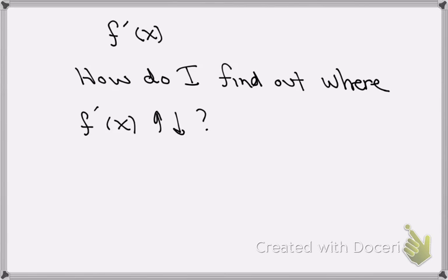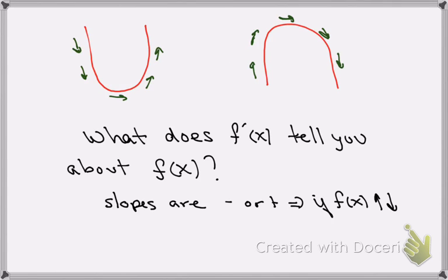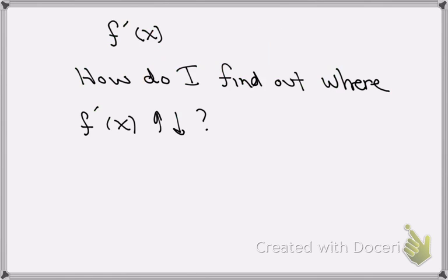Think about what you just said. When you wanted to find out when f of x was increasing or decreasing, you needed f's derivative. If you wanted to know when g of x was increasing or decreasing, you need the derivative of g. So if you wanted to know where the first derivative was increasing or decreasing, you would need the second derivative. Because wherever you're at, if you want to know when that thing is increasing or decreasing, you just need its derivative. If you had the tenth derivative and wanted to know when it was increasing or decreasing, you'd need the eleventh derivative.